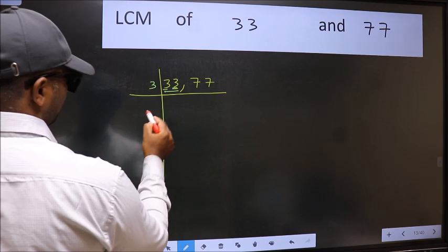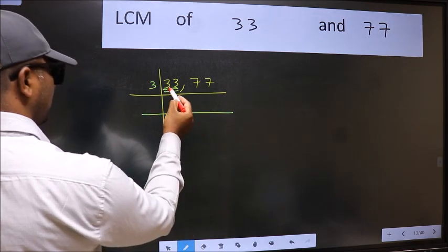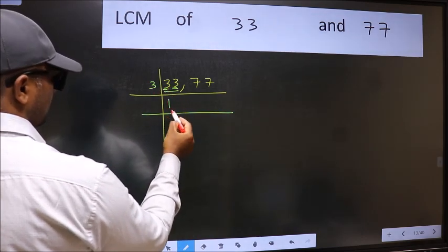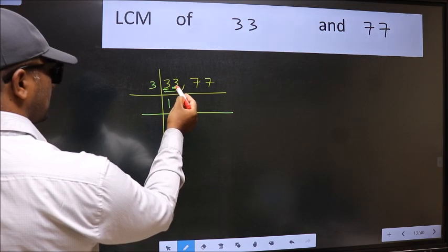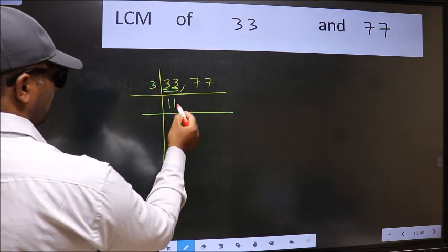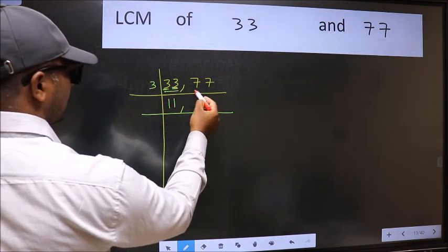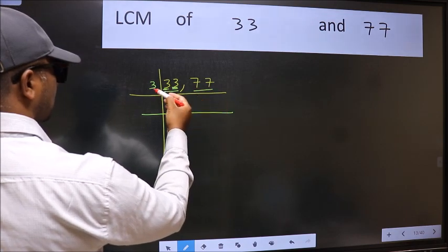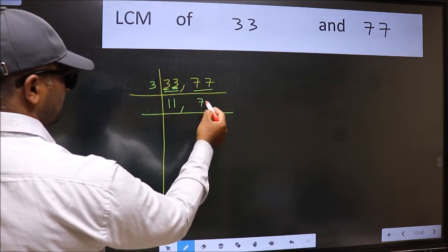So take 3. First number, 3 - when do we get 3 in 3 table? 3 ones 3. The other number 3 - when do we get 3 in 3 table? 3 ones 3. The other number 77 not divisible by 3, so you write it down as it is.